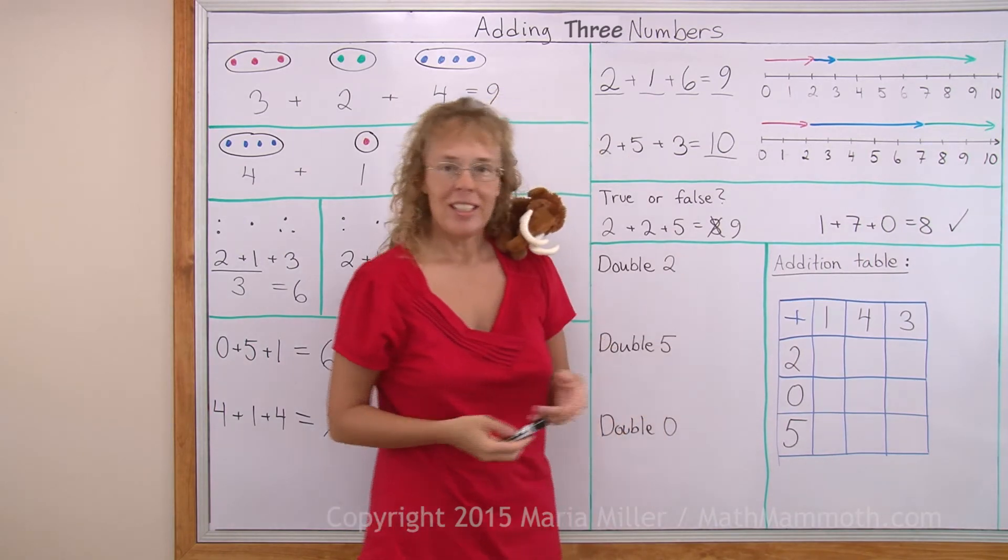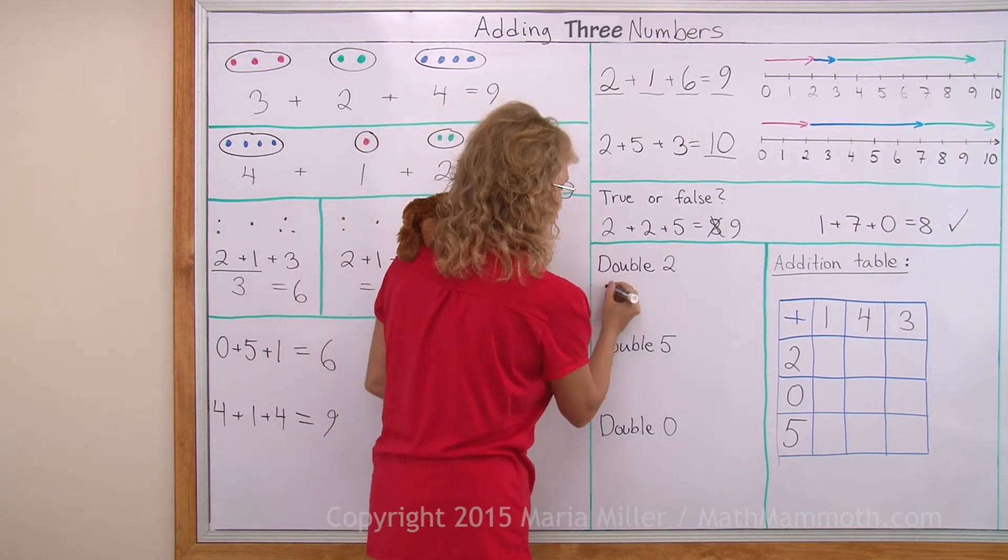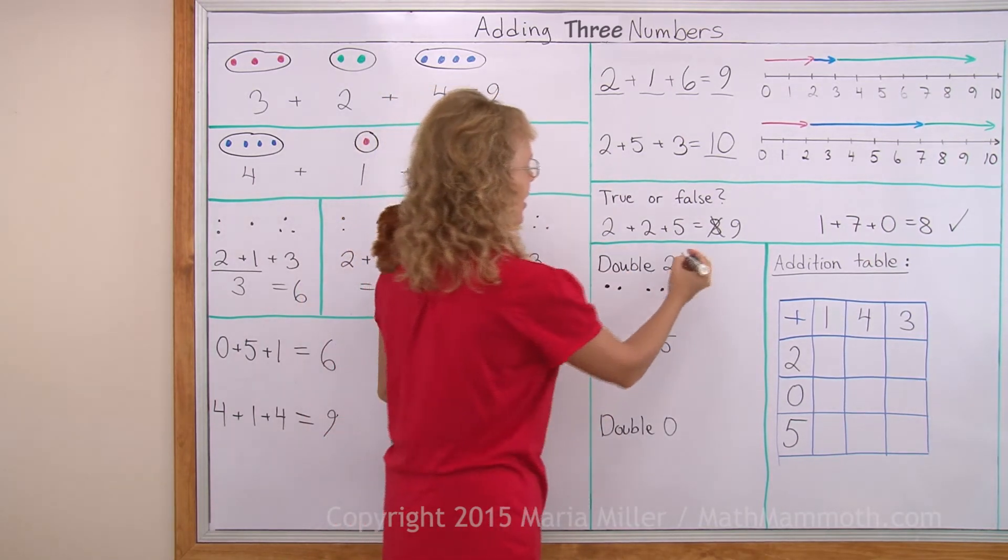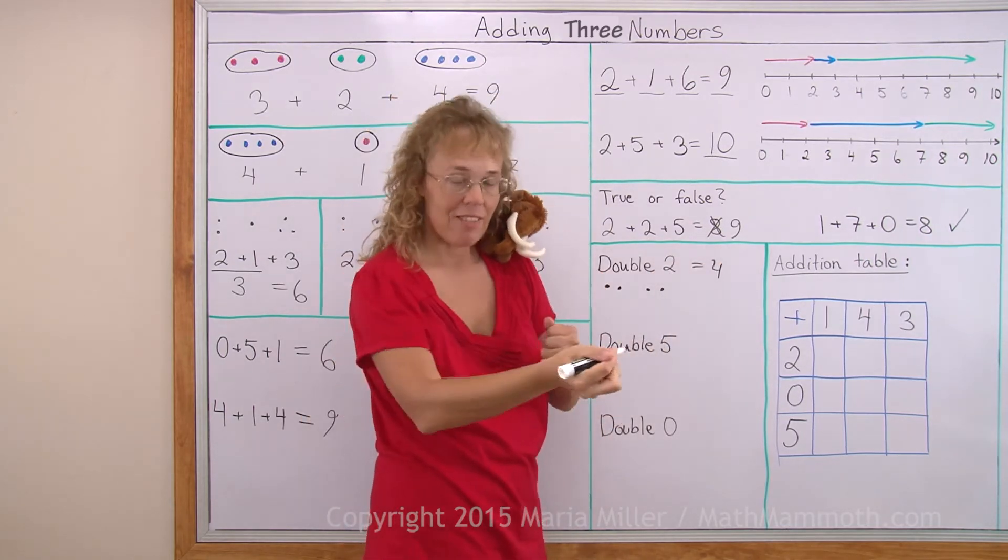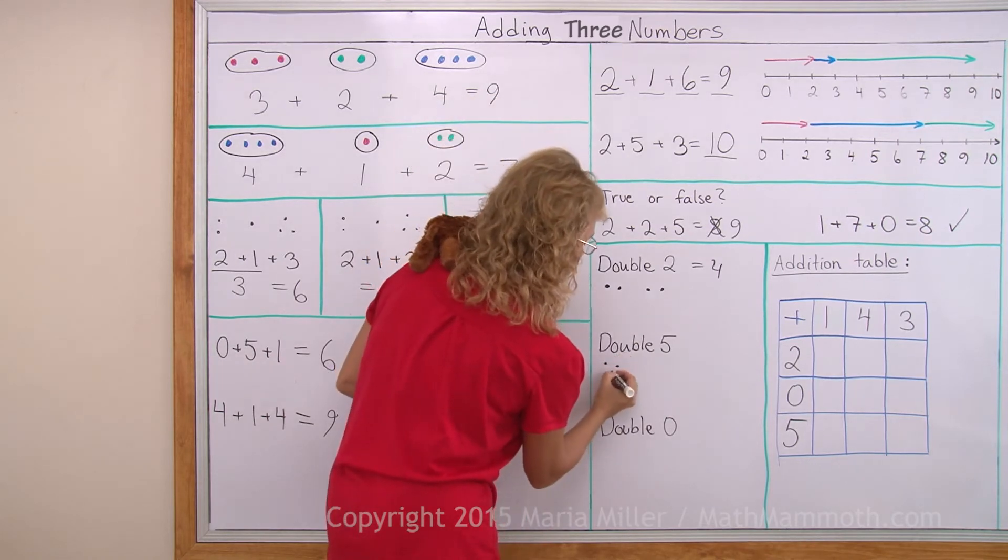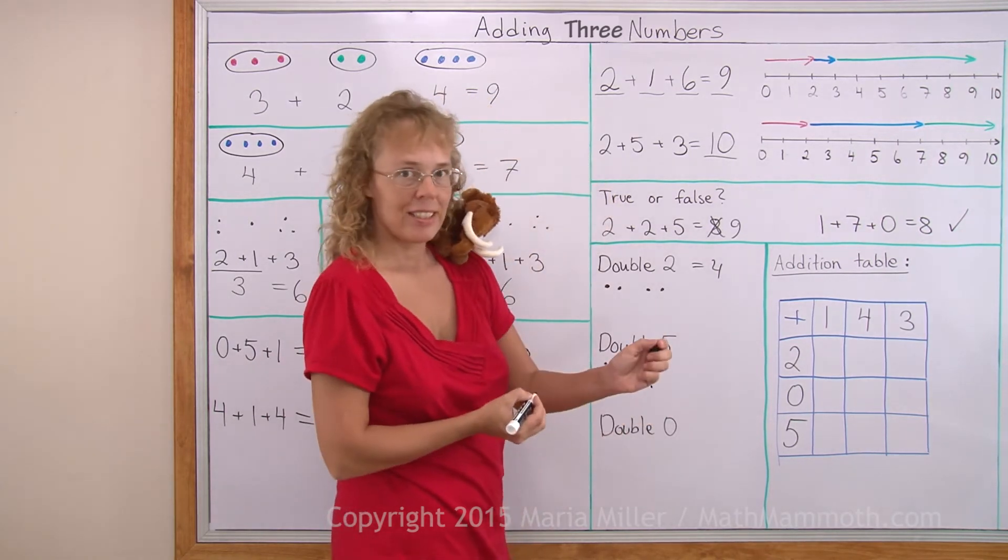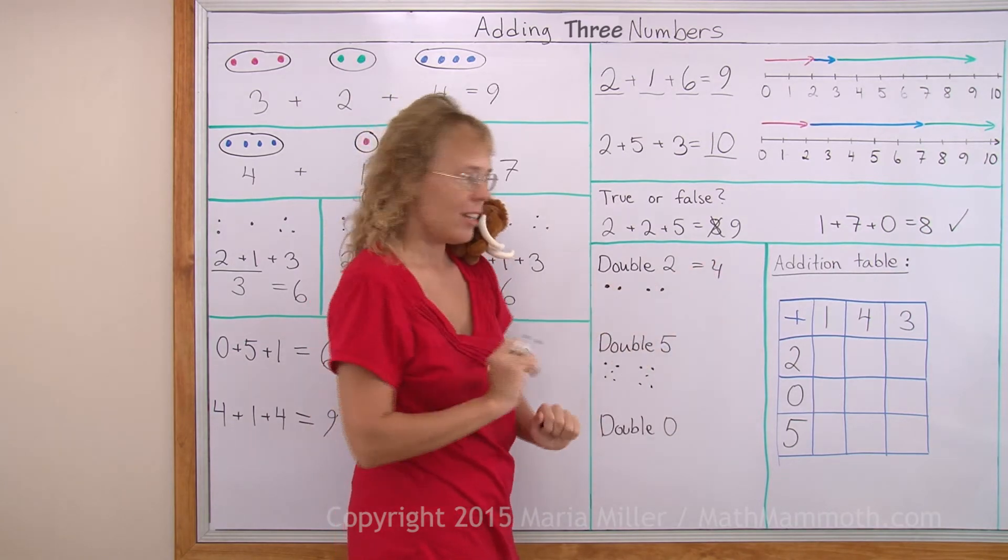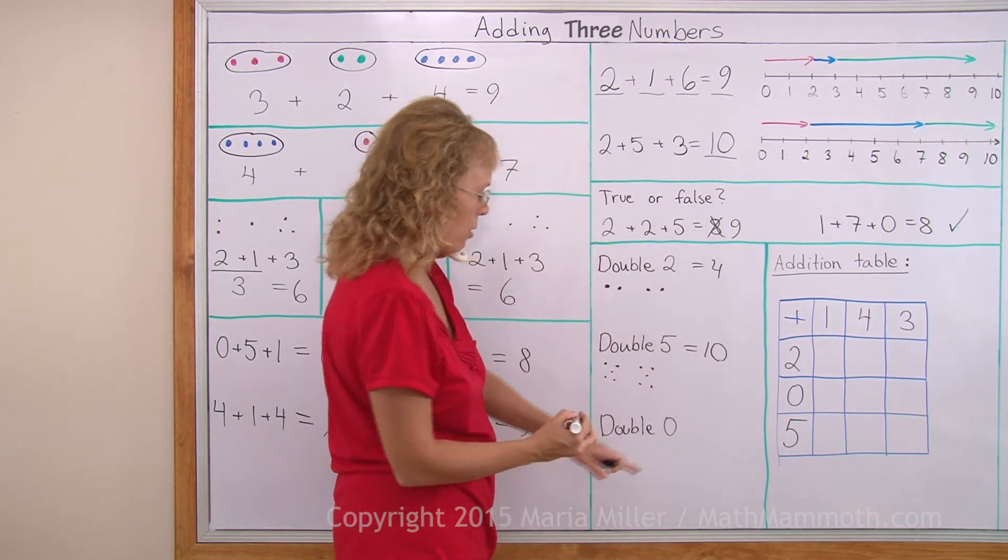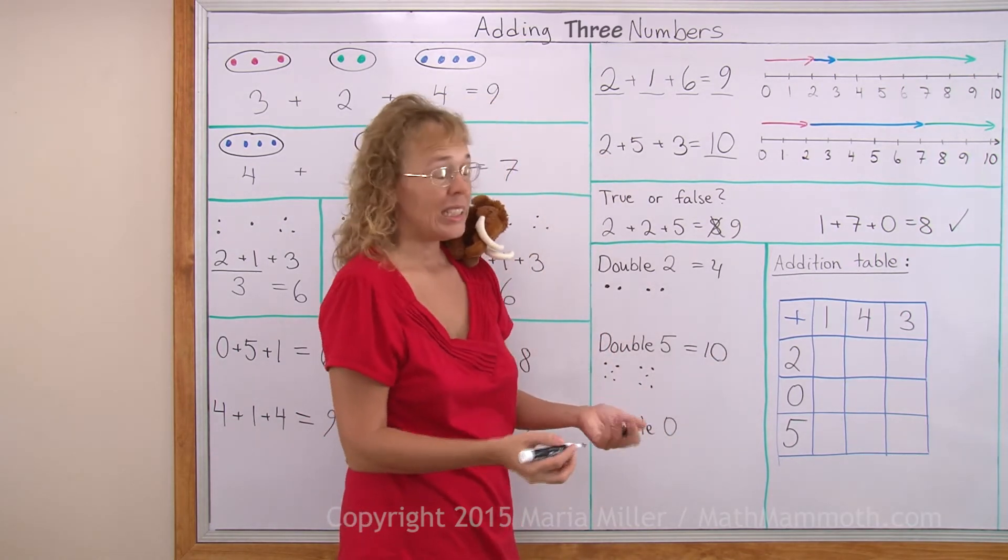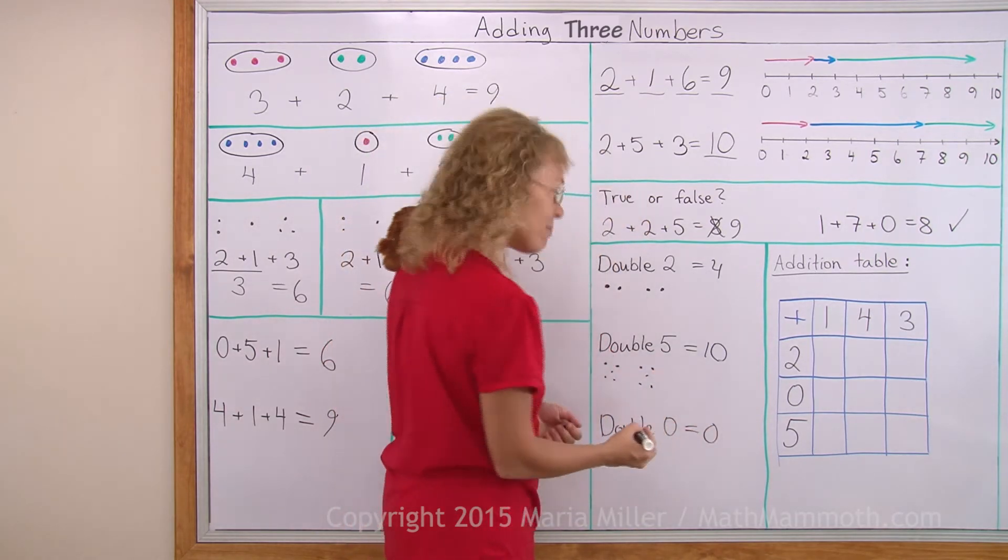Double two. What does that mean? Double two means two and two, so it is like two and two, that is four. Double five means five and five, five two times. So five and another five, that's how much? It's like your fingers, five and five, it makes ten. Double zero is zero and zero, just again zero.